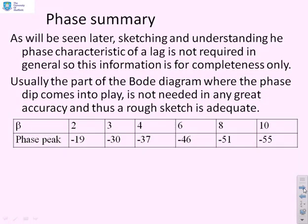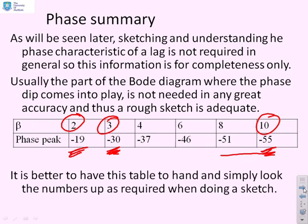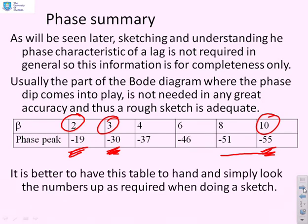Now, you can calculate this phase peak for various different values of beta. So you see at beta equals 2, you get minus 19, beta equals 3, minus 30, and so on up to beta equals 10, you get minus 55. I'm not going to recommend you memorize these values, but it's worth having a table like this to hand because it gives you an idea of how this maximum phase changes with beta. So there's the summary. Better to have this table to hand so you can look up the numbers rather than calculating it every time.